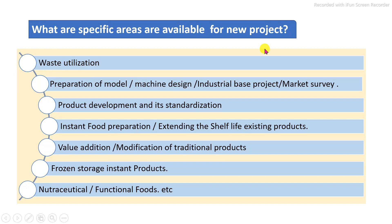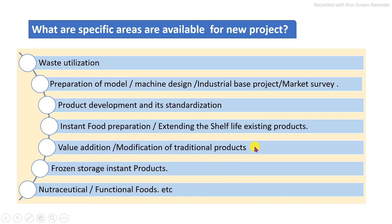The first area is waste utilization — whatever waste is generated in food processing industries is converted to a valued product. Then preparation of models and machine design. Then industrial-based projects involving identification of industrial problems. Market survey-based projects. Development of new products and their standardization process. Instant food preparation and extending existing products. Value addition and modification of traditional products. Frozen and stored instant product preparation. Nutraceutical and functional product developments. These are the available areas to identify a specific project topic.